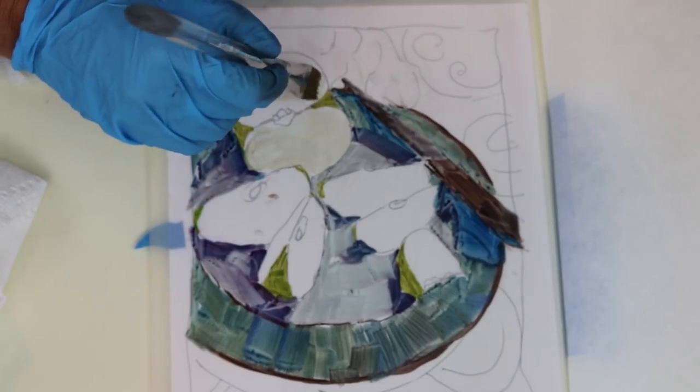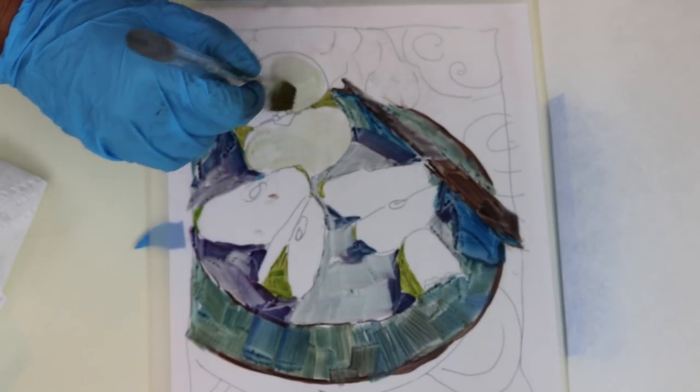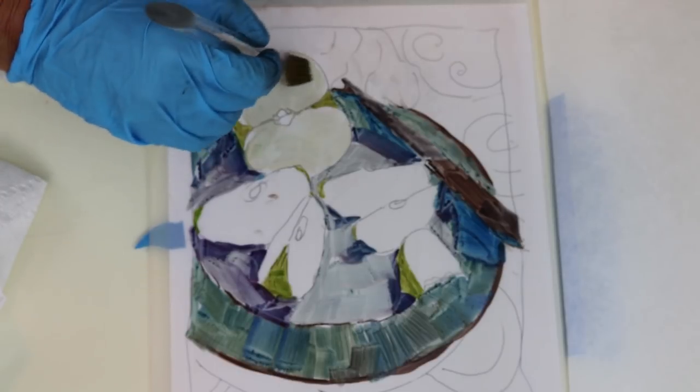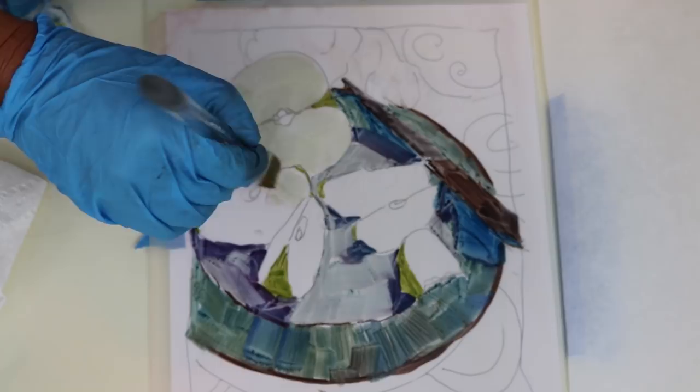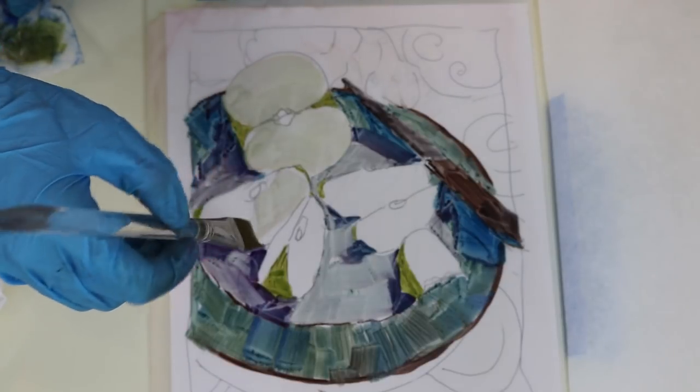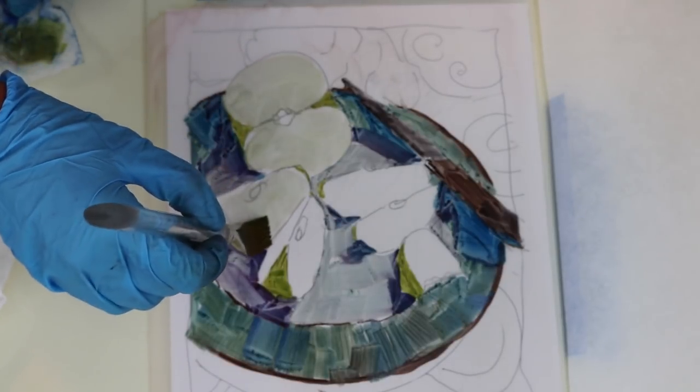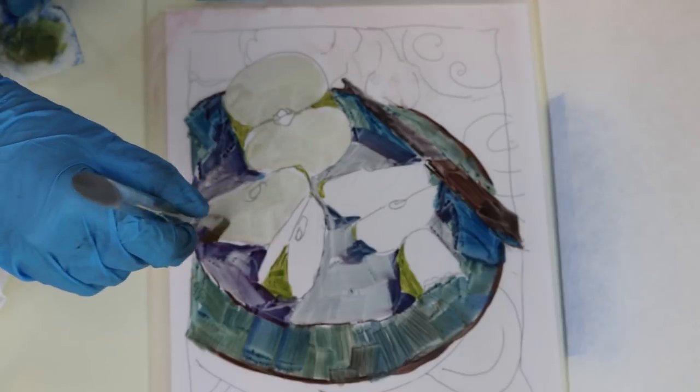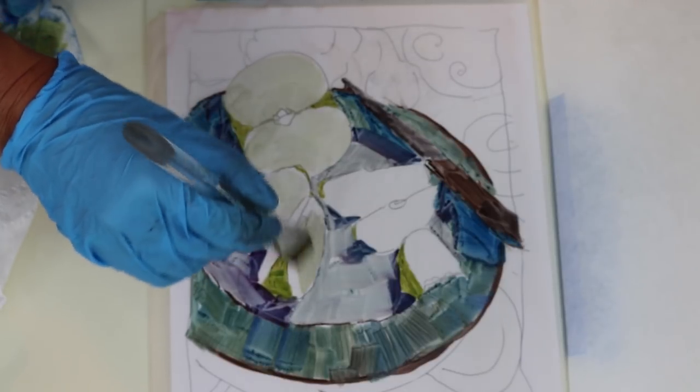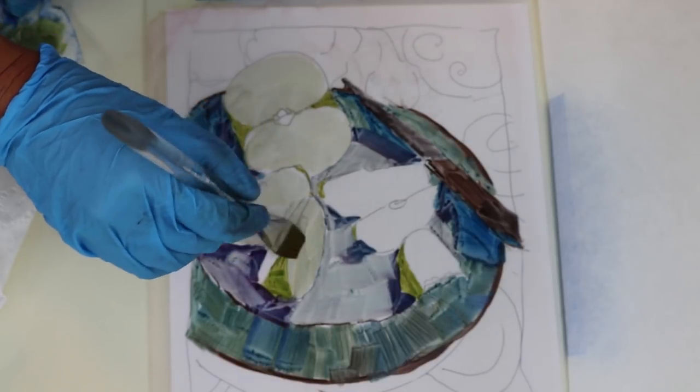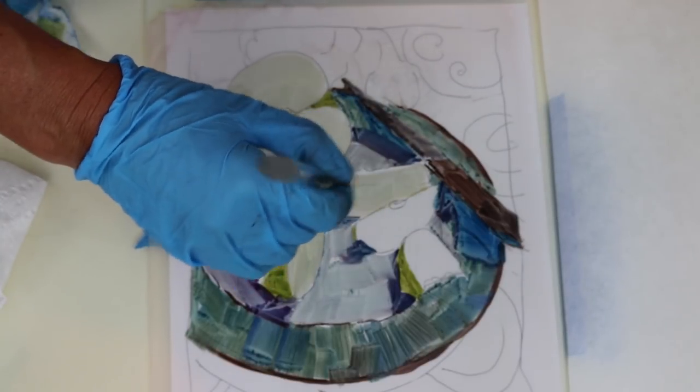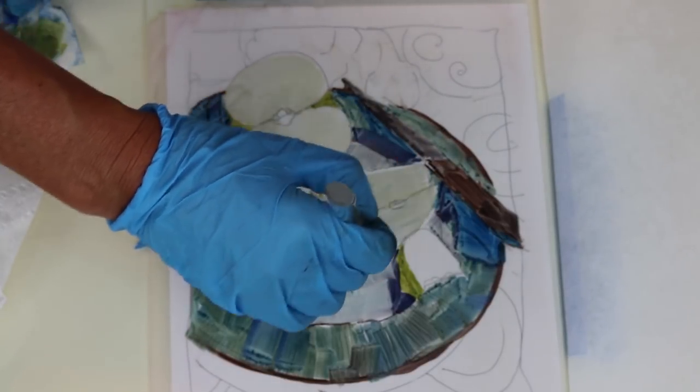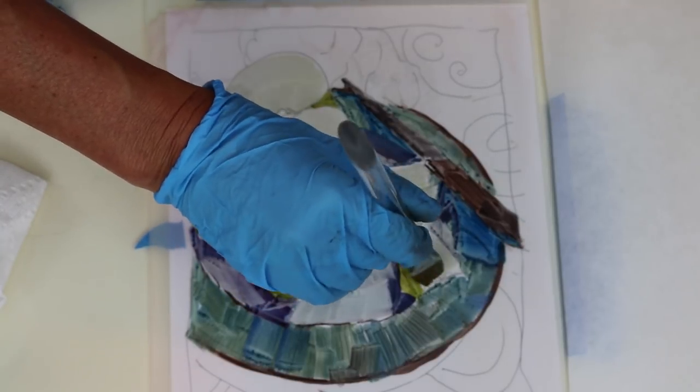This is such a versatile printmaking method. Monotypes are painterly, they can be in color or black and white. You have a ton of options, and if it's not working for you, you just wipe the plate clean and start over. So don't let yourself get frustrated. If you feel that happening, stop, wipe it down and start over.